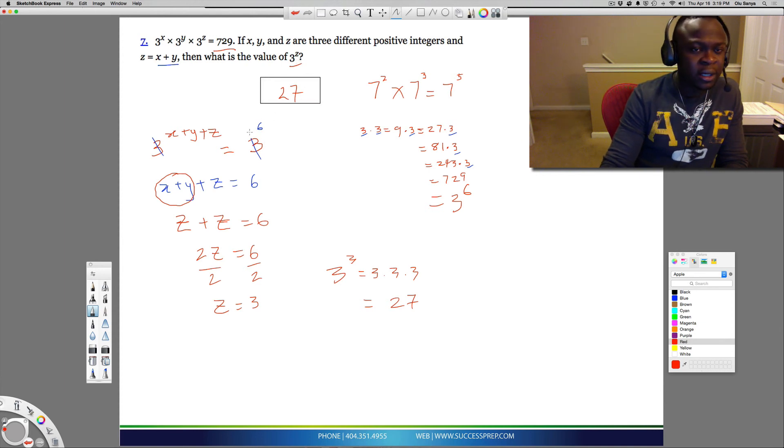And then you answer the question, which is 3 to the z. I had a student who actually did all the work and got z as 3 and just put 3 here. But that's not what the question is saying. It's saying 3 to the z. So it has to be 3 to the 3, which is 27. And that's the answer to this question. The answer is 27.